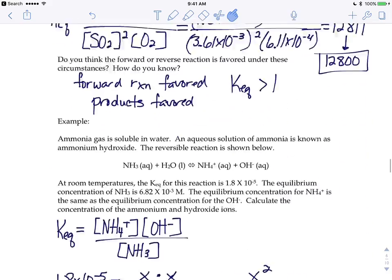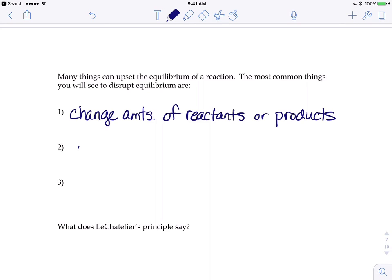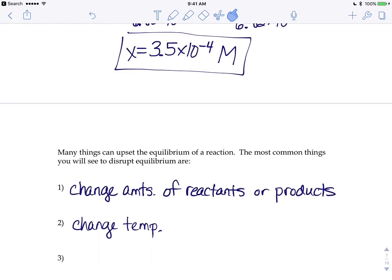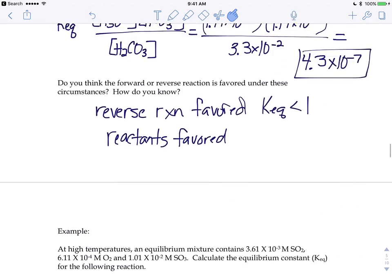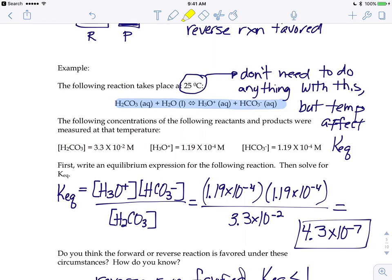A second way we could disrupt equilibrium is to change the temperature at which the reaction takes place. We looked yesterday at a reaction with a temperature, and we talked about how you don't have to do anything with that temperature, but it does affect equilibrium. Chemicals tend to dissolve better at warmer temperatures. So if we ran this reaction at 90 degrees instead of 25 degrees, that would probably change these equilibrium molarities.